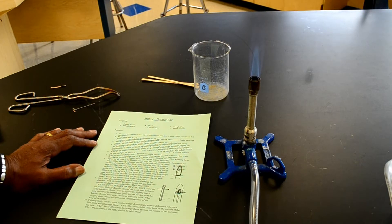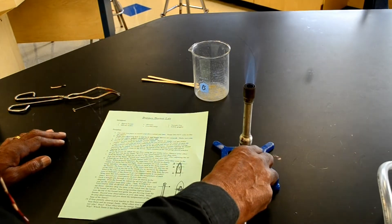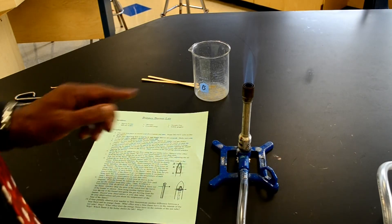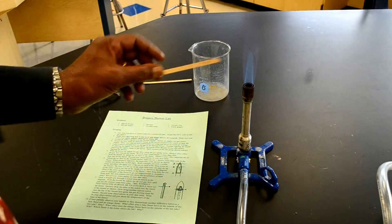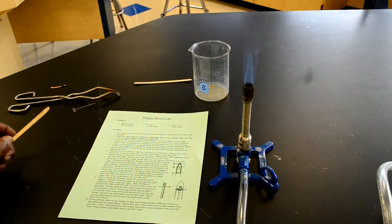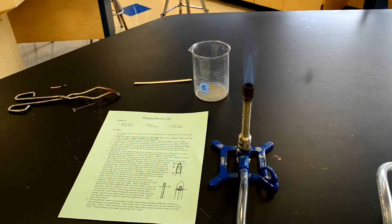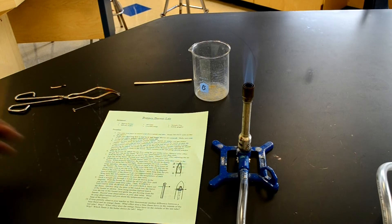Then it says, adjust the air flow to the Bunsen burner until you see a distinct blue cone in the flame. We have a distinct blue cone there, so we're already good with that part. This is the blue cone right here, it's the internal cone. When properly adjusted, the inner blue cone should be clearly visible and about two inches high. I think that's about two inches high, so this flame is good.